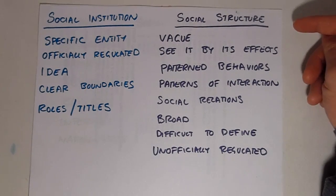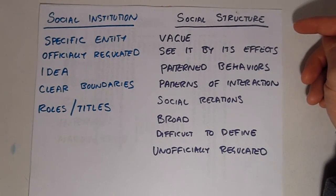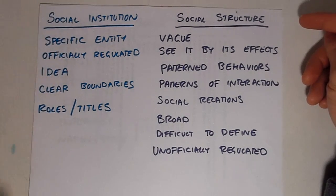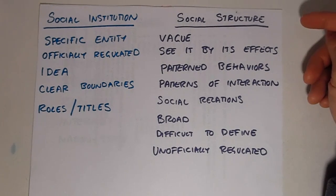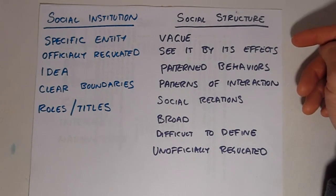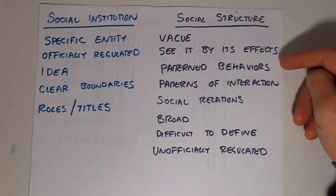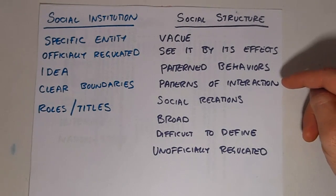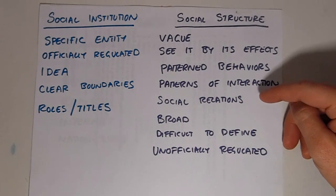A social structure, in contrast, is much more vague. We don't really think of it as a specific kind of thing as we do a social institution. A university, for example, is easy to identify — we know where the campus is located, we know where the borders are, we know where the buildings are. A social structure can really only be seen by its effects. We think of a social structure as a set of patterned behaviors, as patterns of interaction and social relations and relationships.